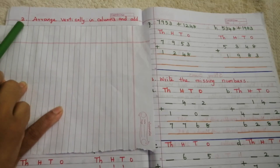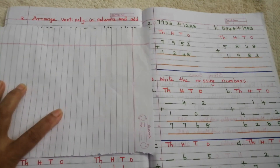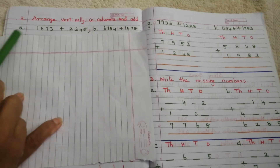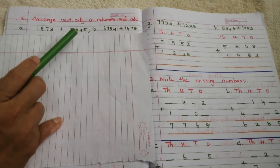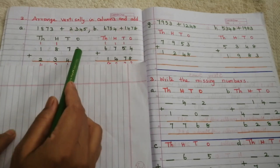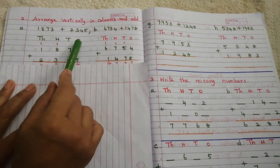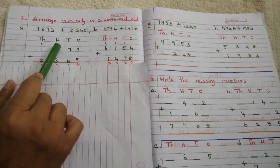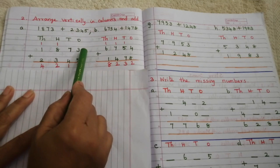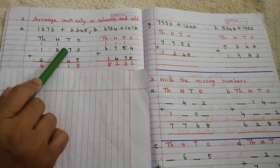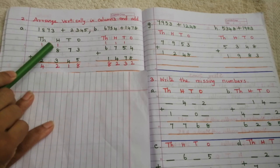Second problem: arrange vertically in columns and add the following numbers. Problem A is 1,873 plus 2,345. Write in column wise with ones, tens, hundreds, and thousands. Then add: 5 plus 3 is 8. 7 plus 4 is 11 — write 1 here and carry 1.